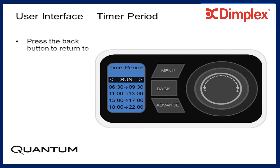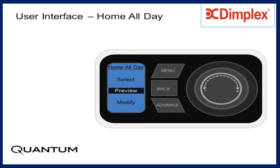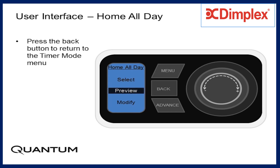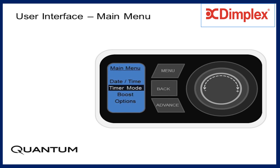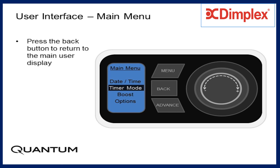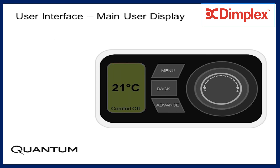Press the back button to return to the Home All Day menu. Press the back button again to return to the timer mode menu. And press the back button once again to return to the main user display. The main user display appears.